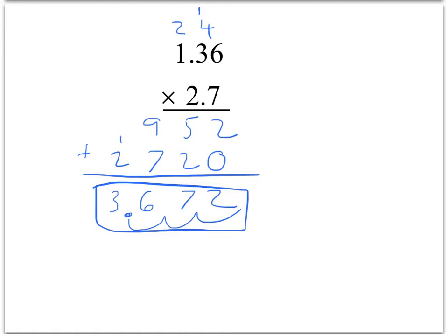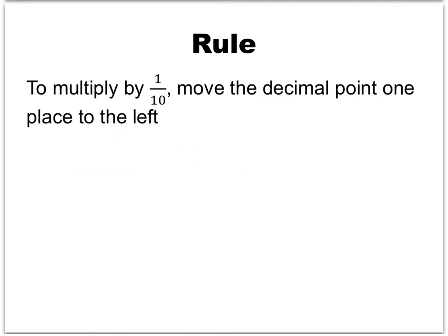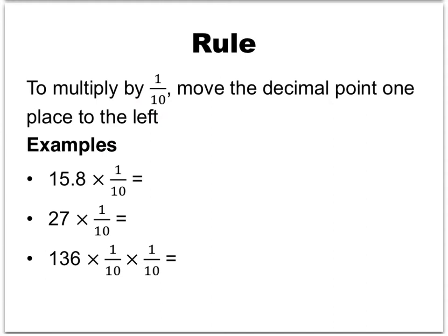So that's how we multiply decimals. The next question is why does this work? I'm going to give an explanation that combines three different ideas. The first idea is a simple rule we'll take for granted: to multiply a number by 1 tenth, move the decimal point one place to the left. For example, 15.8 times 1 tenth equals 1.58. And 27 times 1 tenth: we place the decimal after the ones digit and move it left to get 2.7.